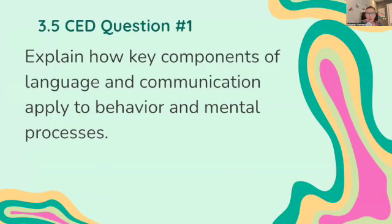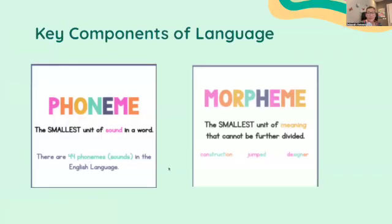Let's start with question number one: explain how key components of language and communication apply to behavior and mental processes. We're going to look at the key components of language — phonemes and morphemes — which are basically the building blocks of language. Starting with phonemes: the definition is the smallest unit of sound in a language. For example, the word 'cat' has three phonemes.